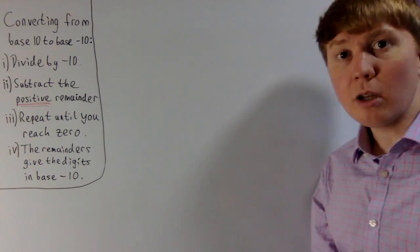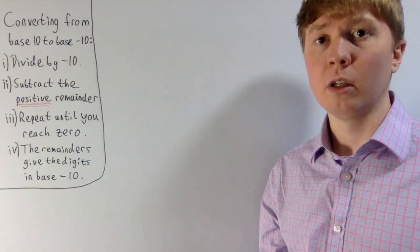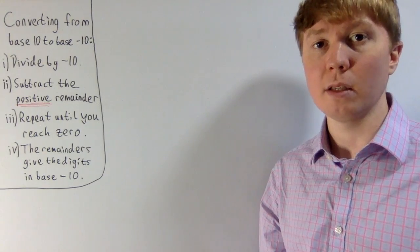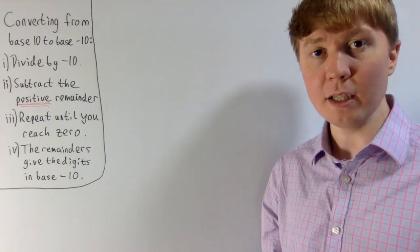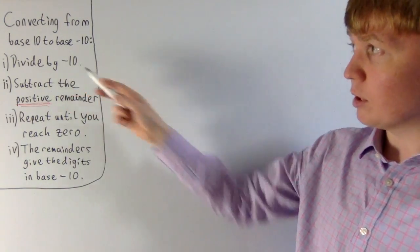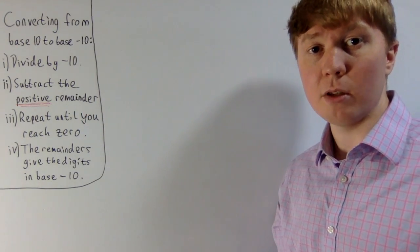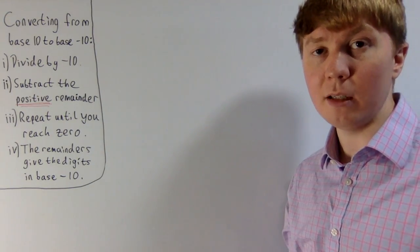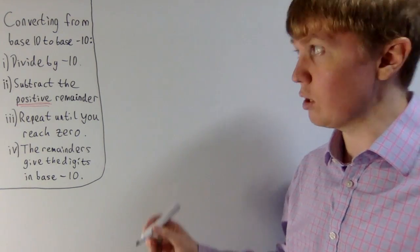Now that we've seen how to convert from base minus 10 to base 10, we'll have a look at the opposite direction. There's actually quite a nice method we can use, which is very similar to how you would convert to other positive bases. Basically, you take your number, divide by minus 10, and find the remainder, setting this up so that your remainder is positive. Then subtract this, and divide what's left by minus 10 again to find the next remainder. Just keep going until you reach zero.